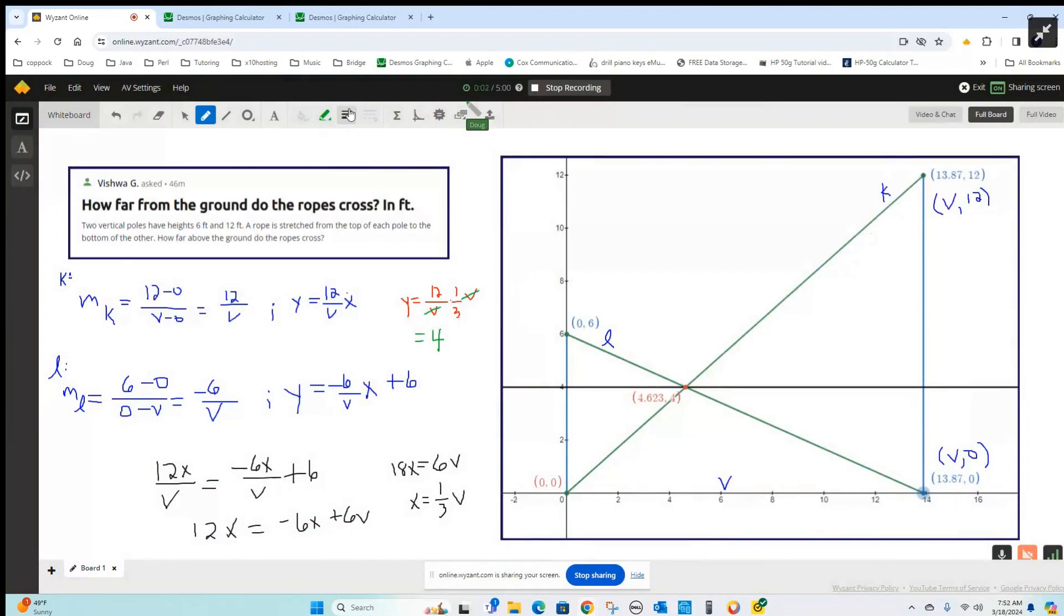Okay, we've got these two vertical poles, one six feet high. So I put this on a coordinate system. The bottom of that pole is at zero, zero, the top of the pole is at zero, six, and over here we have another pole that's 12 feet high.